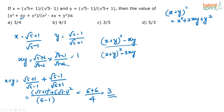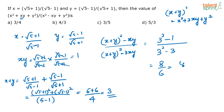Now substitute x+y = 3 and xy = 1 into the expression: (3² - 1) / (3² - 3×1) = (9-1)/(9-3) = 8/6 = 4/3. That is option B. The only formulas used were (x+y)² and a² - b² = (a+b)(a-b). Just rearrange accordingly and get the answer.